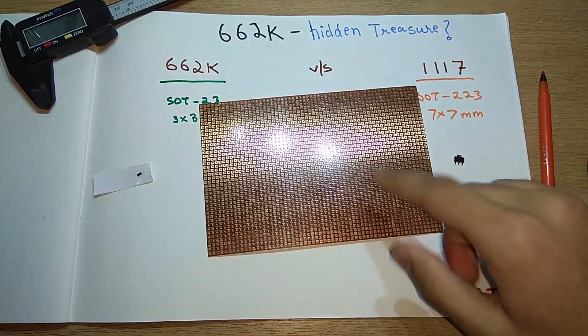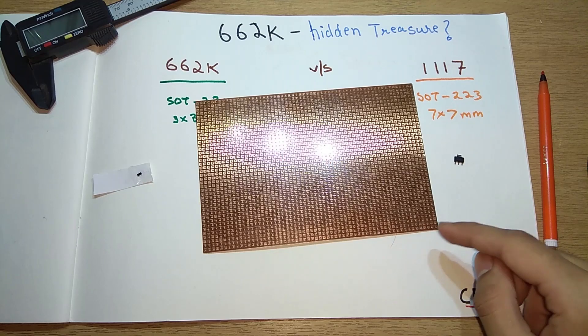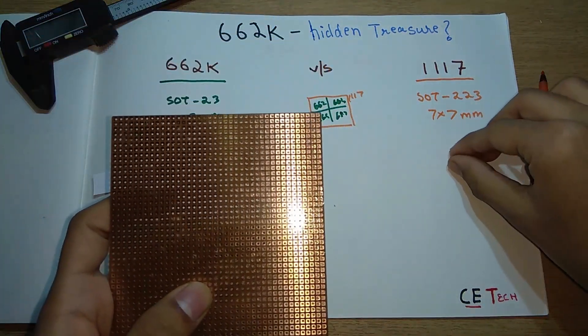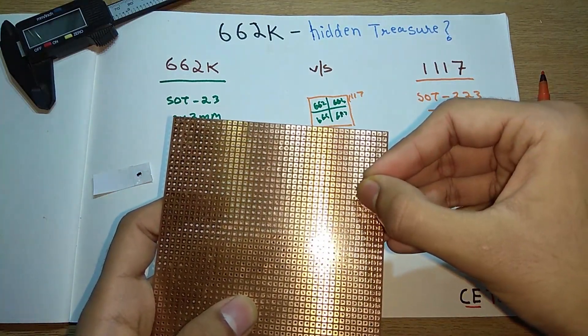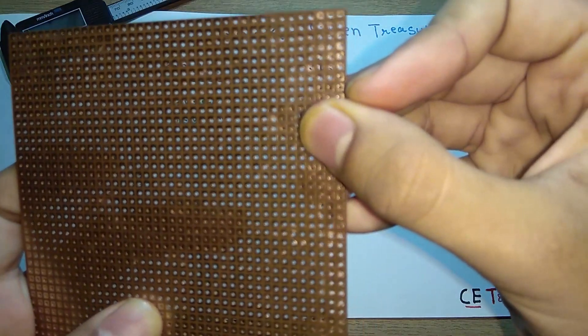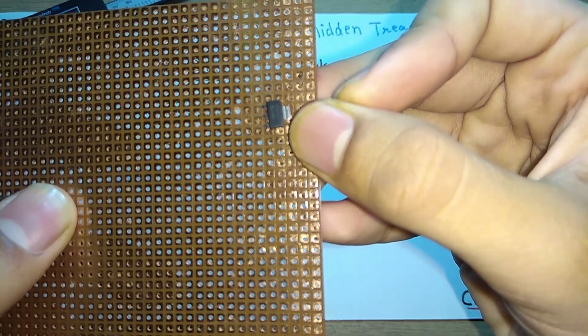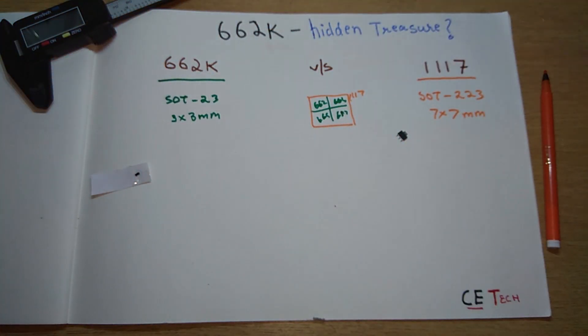This is a normal prototyping board which has a pitch of 2.5mm. The 1117 can be easily soldered by hand because its pitch almost matches the width. You can see it almost matches, so that's a plus point. For hobbyists, the 1117 is probably a better option.